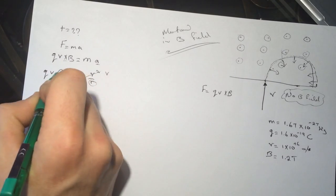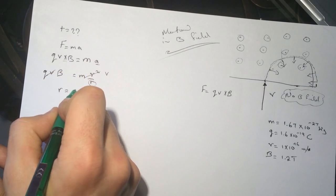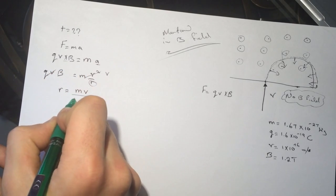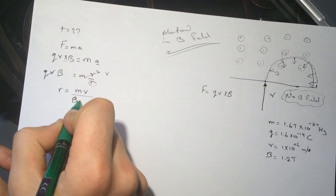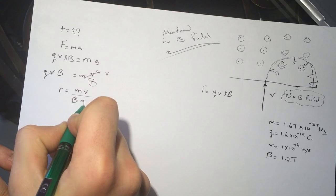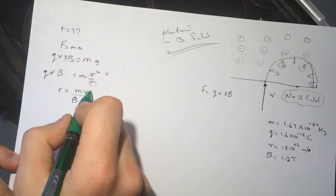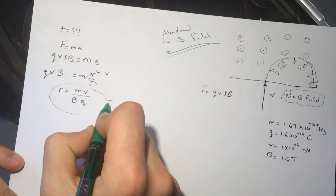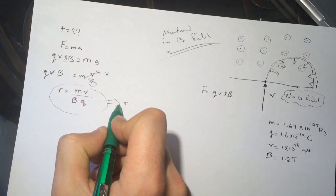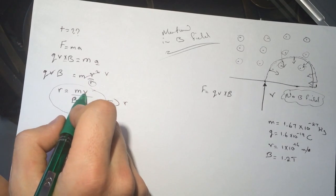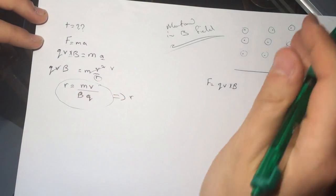So we can get the R from this equation. This is the R. We have everything: we have Q, B, M, and V.